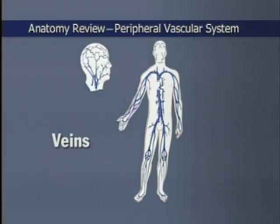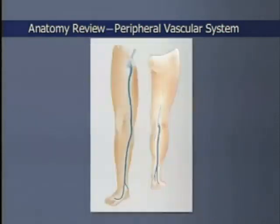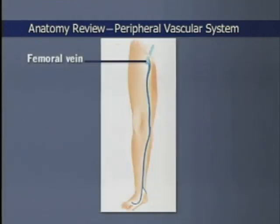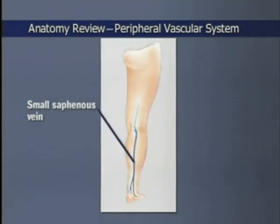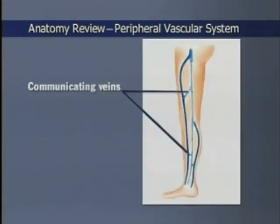Veins, which may be deep or superficial, carry deoxygenated blood back to the heart. Because the veins of the leg are especially susceptible to dysfunction, they warrant special attention. Deep leg veins include the femoral vein, which lies just medial to the femoral artery below the inguinal ligament. Superficial leg veins include the great saphenous vein, which runs from the dorsum of the foot to the groin, and the small saphenous vein, which runs from the side of the foot to the back of the knee. Communicating veins interconnect the deep and superficial veins.